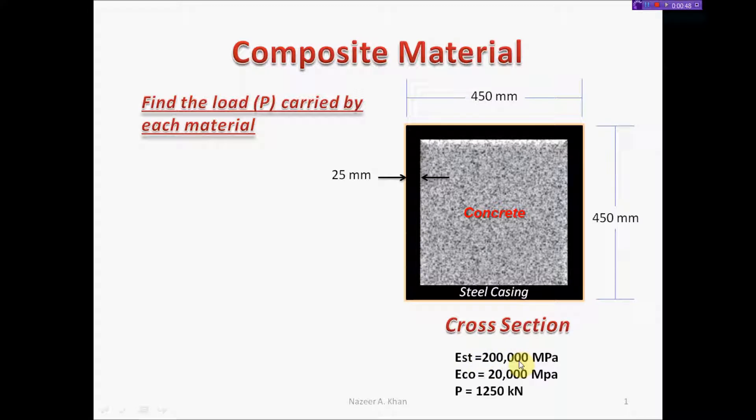We're given the modulus of elasticity of steel as 200,000 MPa and concrete as 20,000 MPa. The load applied to this member is 1,250 kilonewtons. Remember, this is a cross-section with vertical height, as if a member is chopped in half and you're looking at the end piece.